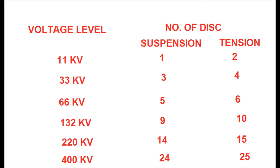In summary, the number of discs and voltage levels are shown in the figure. For 11 kV: suspension string uses 1 disc, tension uses 2. For 33 kV: suspension uses 3, tension uses 4. For 66 kV: suspension uses 5, tension uses 6. For 132 kV: suspension uses 9, tension uses 10. For 220 kV: suspension uses 14, tension uses 15.